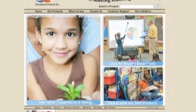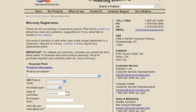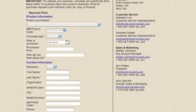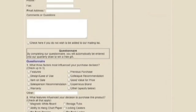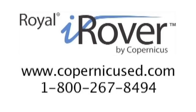Validate your frame warranty at www.copernicused.com by submitting the online form located under the customer support tab. You'll be automatically entered into a draw for a chance to win a Copernicus product. Thank you for purchasing the Royal iRover. Don't forget to fill out the user survey included with your assembly instructions for a free gift. We appreciate your feedback.